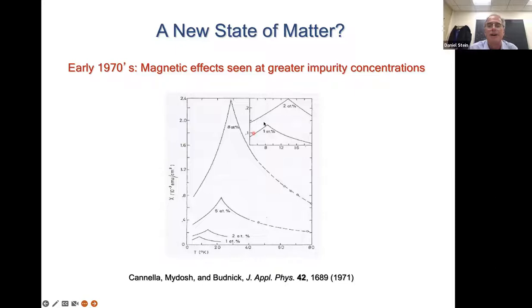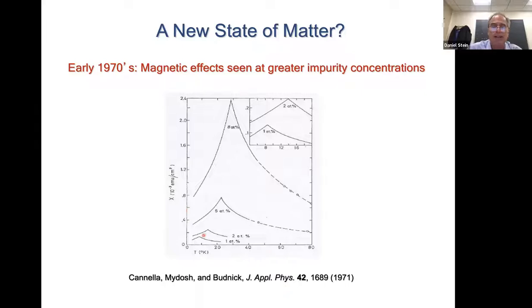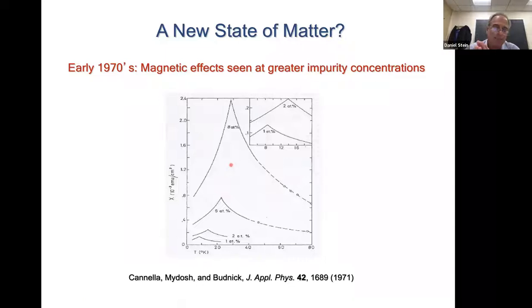This is a classic experiment from the very early seventies in which Canella et al. looked at the magnetic susceptibility of gold-iron — a few percent of iron atoms diluted in a gold matrix, at 1%, 2%, up to 8%. And as you're aware, a cusp in the susceptibility is typically indicative of a phase transition.